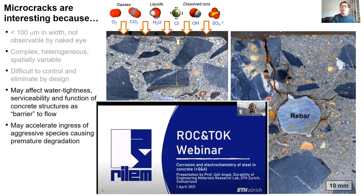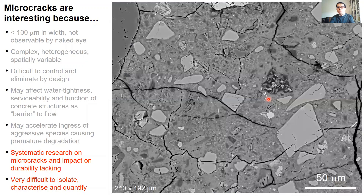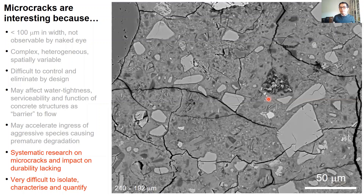Although for a long time people have known that microcracks exist in concrete and suspected they may impact engineering properties, to our surprise very little research has been carried out to study microcracks in a fundamental and systematic manner. So we don't really understand the impact on mass transport and the impact on durability of concrete. Part of the reason is they are small and difficult to detect, they are complex and spatially variable. This complexity is compounded by the lack of good characterization techniques to study microcracks at sufficiently high resolution and representative volume, together with experimental protocols to isolate, characterize, and measure their effects.